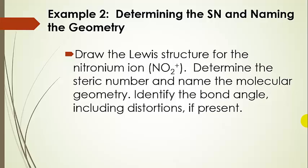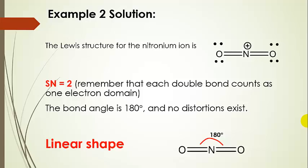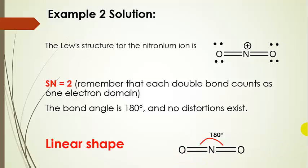Here's another example: the nitronium ion. Here's the best Lewis structure — the central atom is nitrogen with double bonds to each oxygen. Each oxygen has two lone pairs, but for VSEPR purposes we don't consider those. Each double bond counts as only one electron domain toward the steric number, so the steric number is two. There's nothing on the central atom to distort the bond angle, so it's 180 degrees. The name of this geometry is linear.